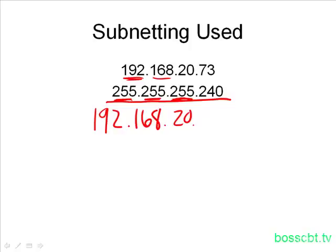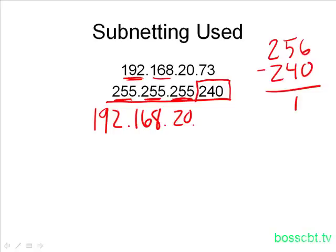As you can probably guess, there's a special formula for this. What we do is take 256 and subtract from it whatever the interesting octet is in the subnet mask. I'm calling it 'interesting' because it's not 255 and it's not zero — the values we already know how to handle automatically. So we subtract 240 from 256, and we get an answer of 16. This is a special number that's going to help us determine what the last octet value will be. In the IP address, we have the value of 73 in the fourth octet.